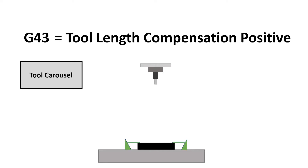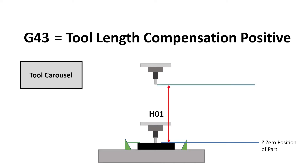During the setup process, tool one was touched off to the part zero surface, as we can see here. From this position, a tool length distance offset was recorded. This tool length is referred to as the Z-axis origin move to the part zero surface. So all we have done is move the spindle from the machine home position with tool number one in the spindle, then touch the end of the tool off on the workpiece and register the move distance. That is the H01 number — that's the number that gets registered.